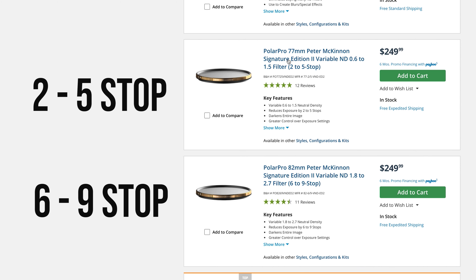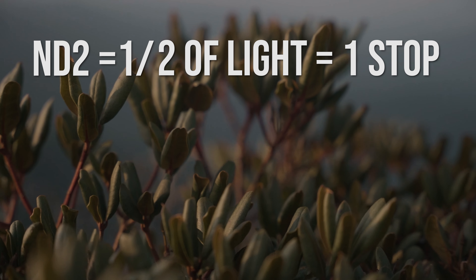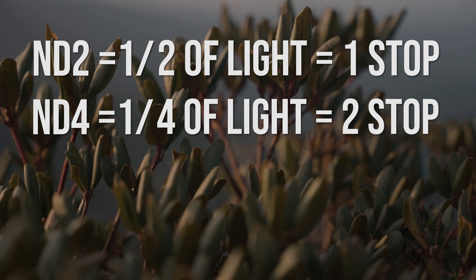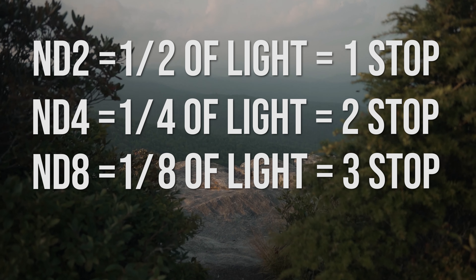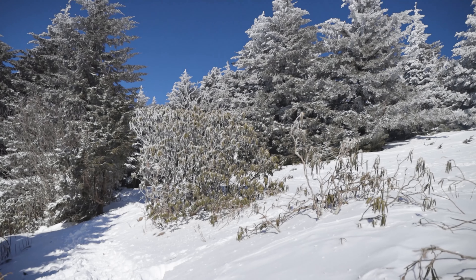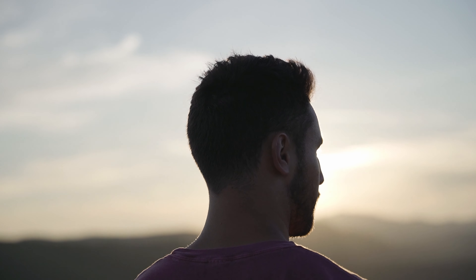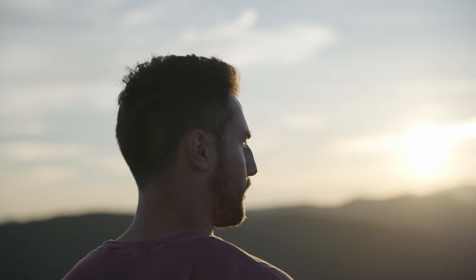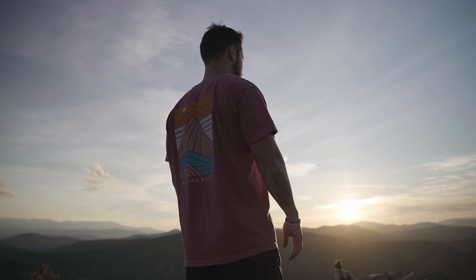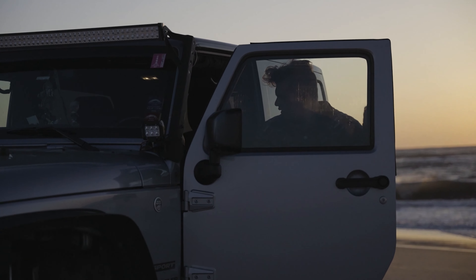When researching and purchasing an ND or variable ND filter, you'll see different stops indicated — for example, ND4 or a variable ND that says ND4 to ND32. This indicates the stops of light the filter allows through. An ND2 allows one half of the light through for a one-stop reduction; ND4 allows one fourth for two stops; ND8 allows one eighth for three stops; ND16 allows one sixteenth for four stops, and so on. The higher the number, the more light it blocks. Shooting in bright daylight in snow you'd need around ND64, whereas shooting a sunset with softer light you could use a lower stop like ND4 or ND8.